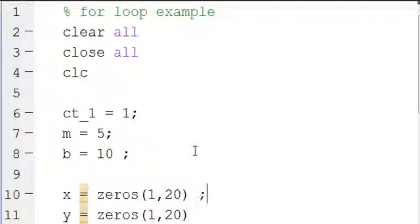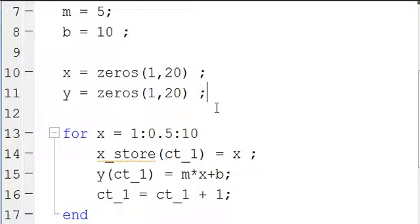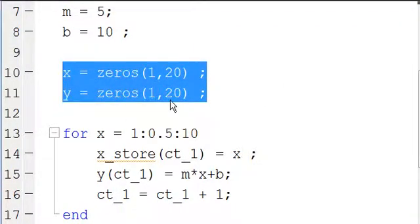And then we want semicolons because we don't want these to print to the command window. So if we run this, and let's say we just want to evaluate these two lines, we can highlight them and hit F9.